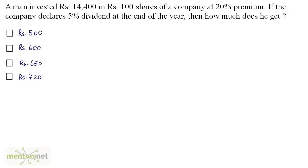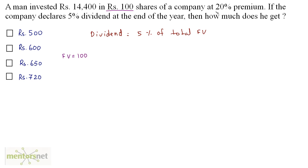A man invested Rs 14,400 in Rs 100 shares of a company at 20% premium. If the company declares 5% dividend at the end of the year, then how much does he get? The dividend is 5% of the total face value. The face value of one share is Rs 100. At 20% premium, the market value is a 20% increase on 100, which gives Rs 120.